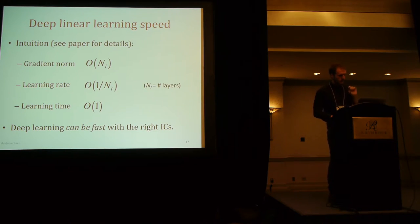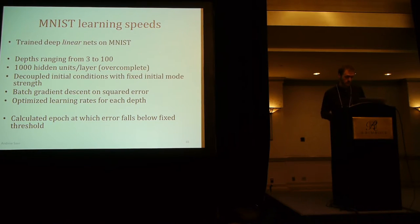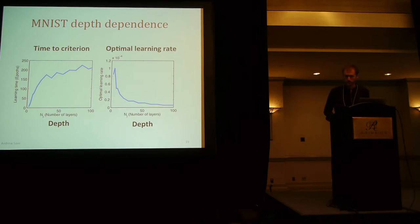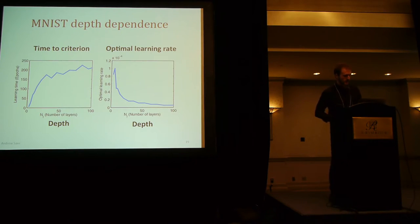Learning can be fast with the right initial conditions. We did some experiments on MNIST with depths ranging from 3 to 100 — 100 is seriously deep — using 1,000 hidden units. The learning times do look like they're saturating: they're not diverging as depth scales up. And we get the predicted 1 over N scaling on the optimal learning rate, carefully optimizing the learning rate for each depth.